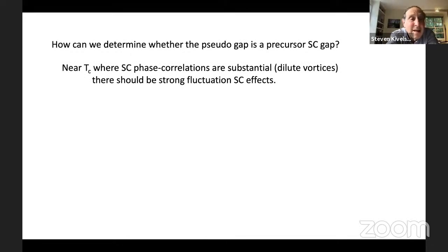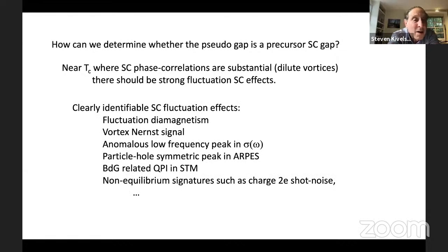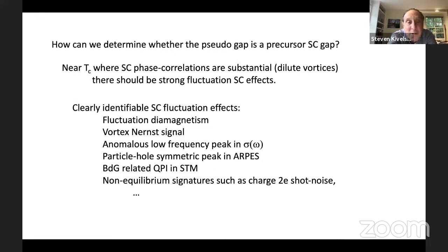Near TC, where superconducting correlations are substantial, there should be strong superconducting fluctuation effects. This is unambiguously true: there are clearly identifiable superconducting fluctuation effects seen in some range of temperatures above TC, typically on the order of 30 Kelvin above TC. There is strong fluctuation diamagnetism, a vortex Nernst signal, an anomalous peak in the low-frequency optical conductivity, particle-hole symmetric features in ARPES spectrum, quasi-particle interference patterns identifiable as Bogoliubov-de Gennes quasi-particles in STM, and non-equilibrium signatures such as charge 2e shot noise.